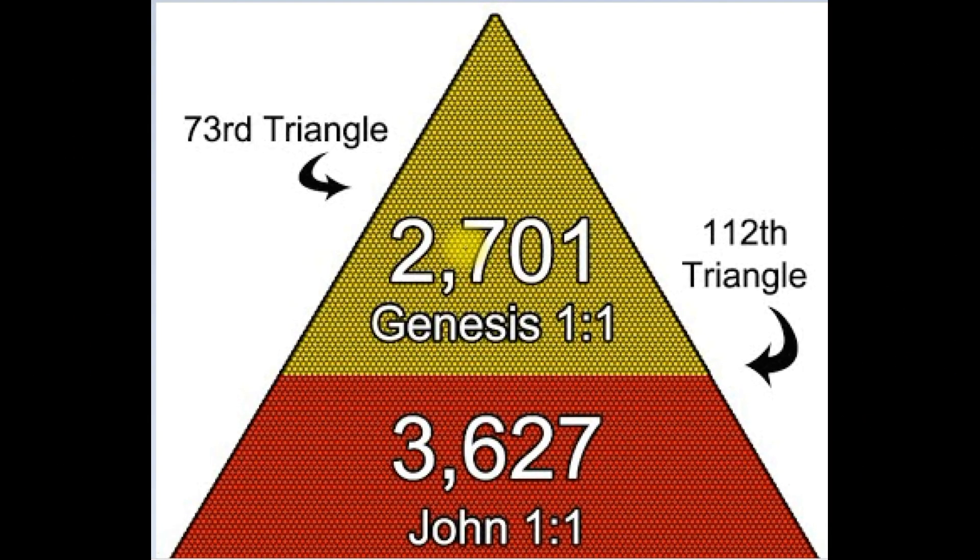So the Hebrew gematria value for Genesis 1 verse 1 equals 2,701, which is the 73rd triangle number. This is the number of units that create this top triangle. And in Greek, John 1 verse 1 has a Greek letter value of 3,627. That's the number of units that completes this triangle. And it is the 112th triangle number. And they have a sum total value of 6,328.